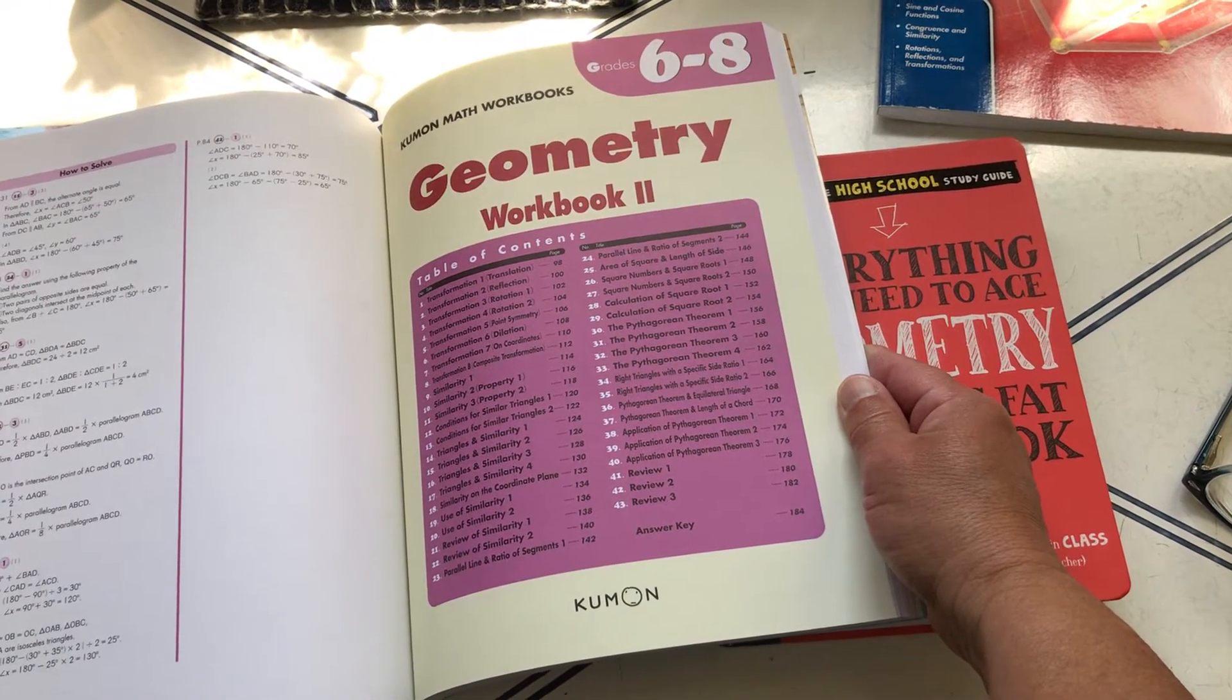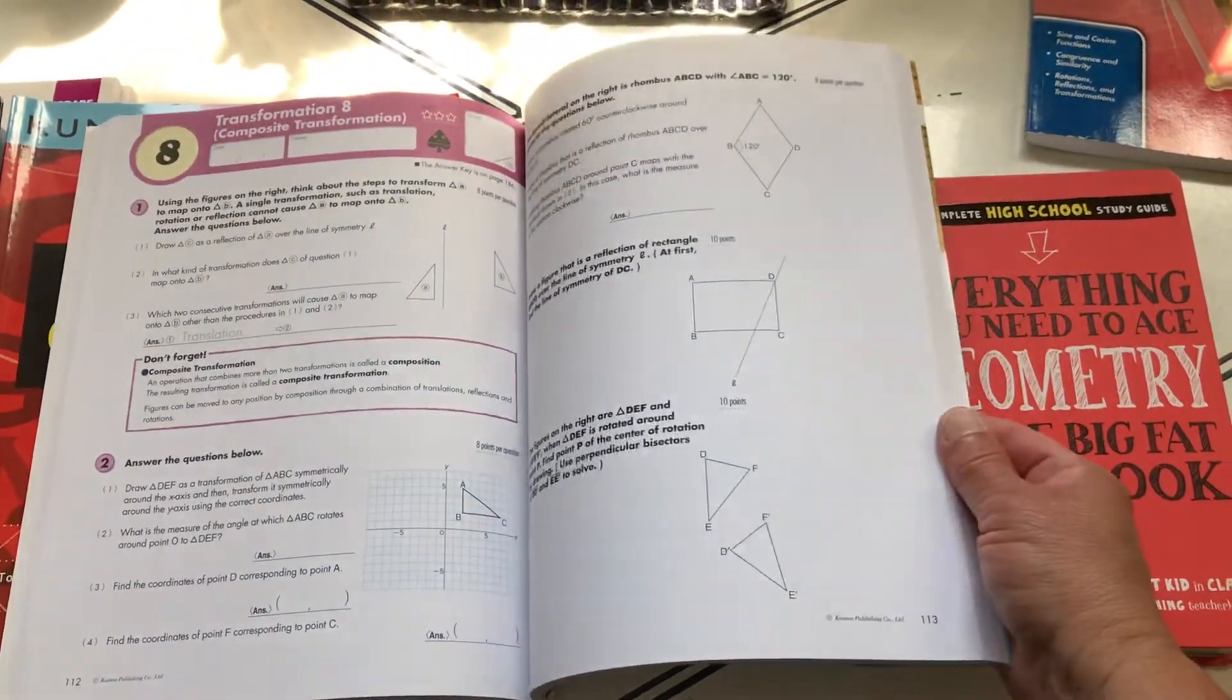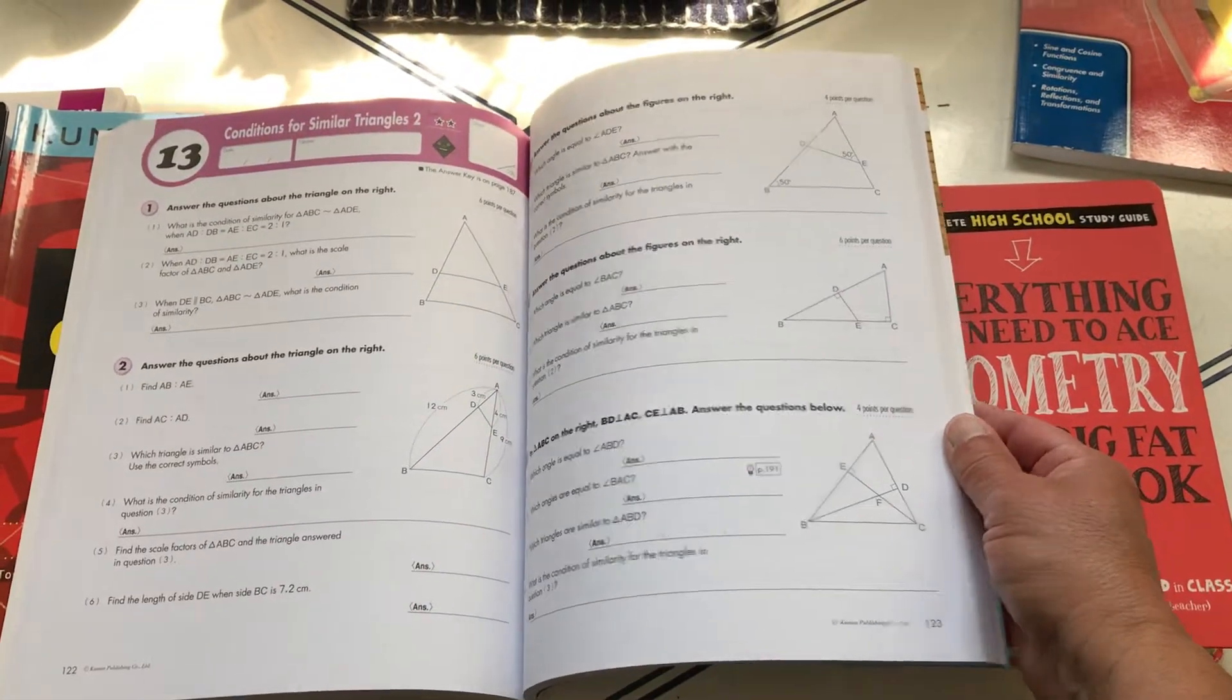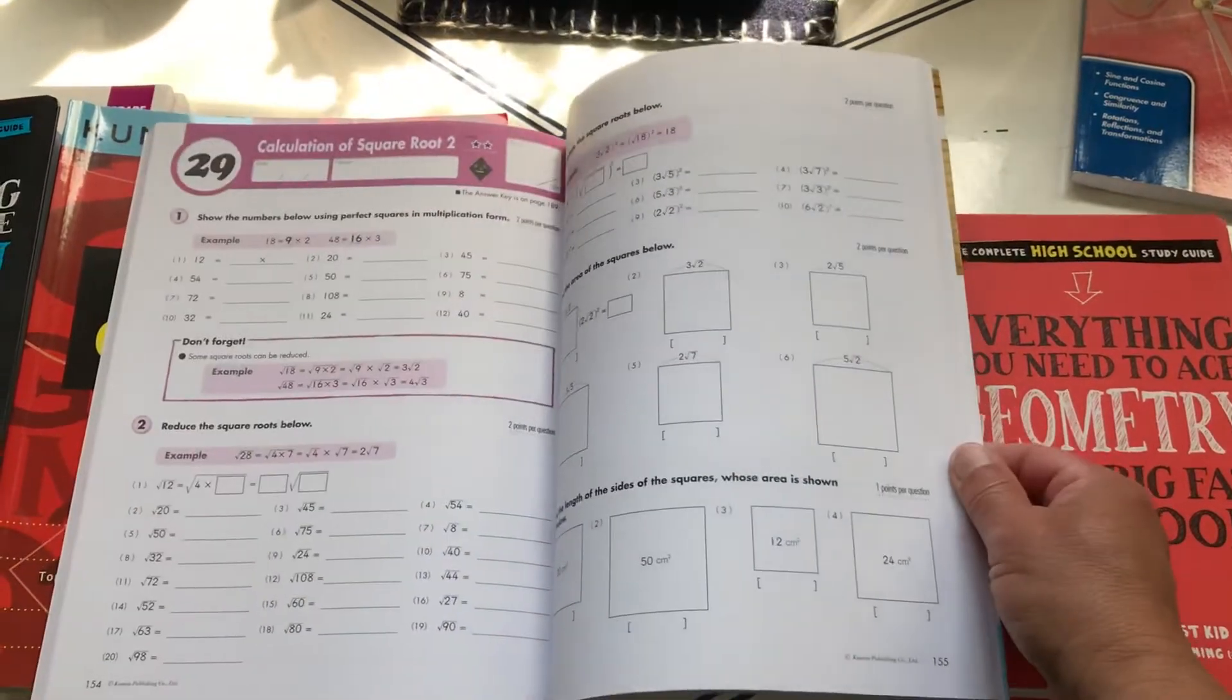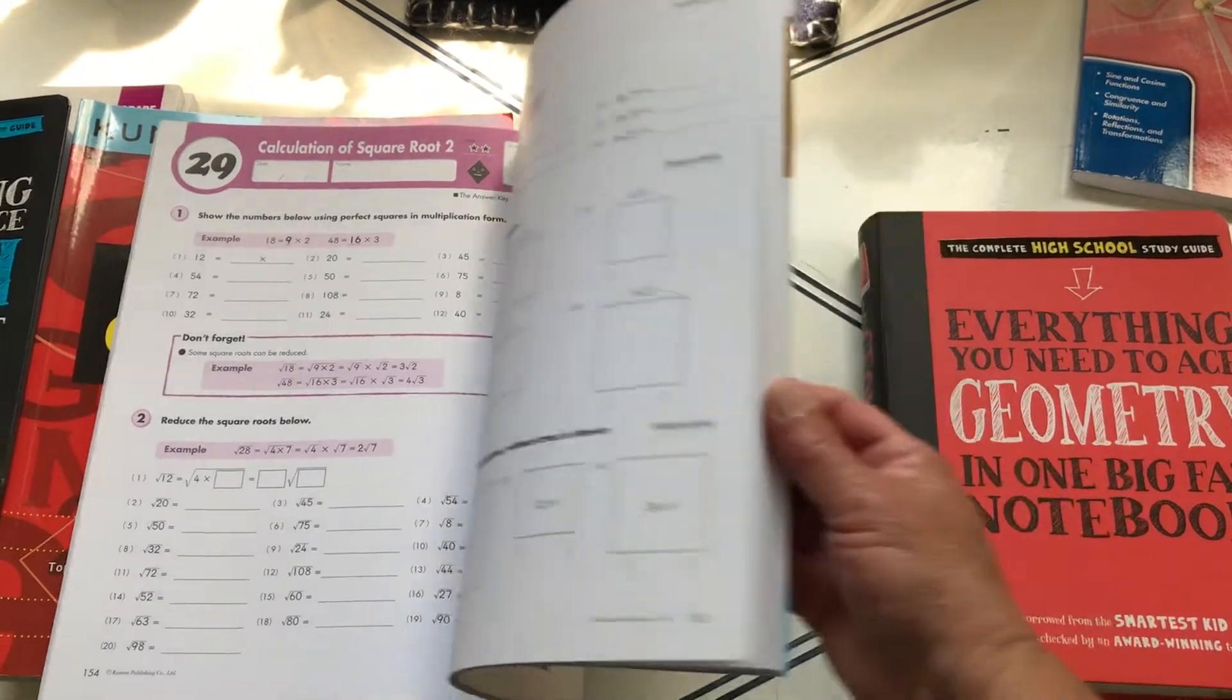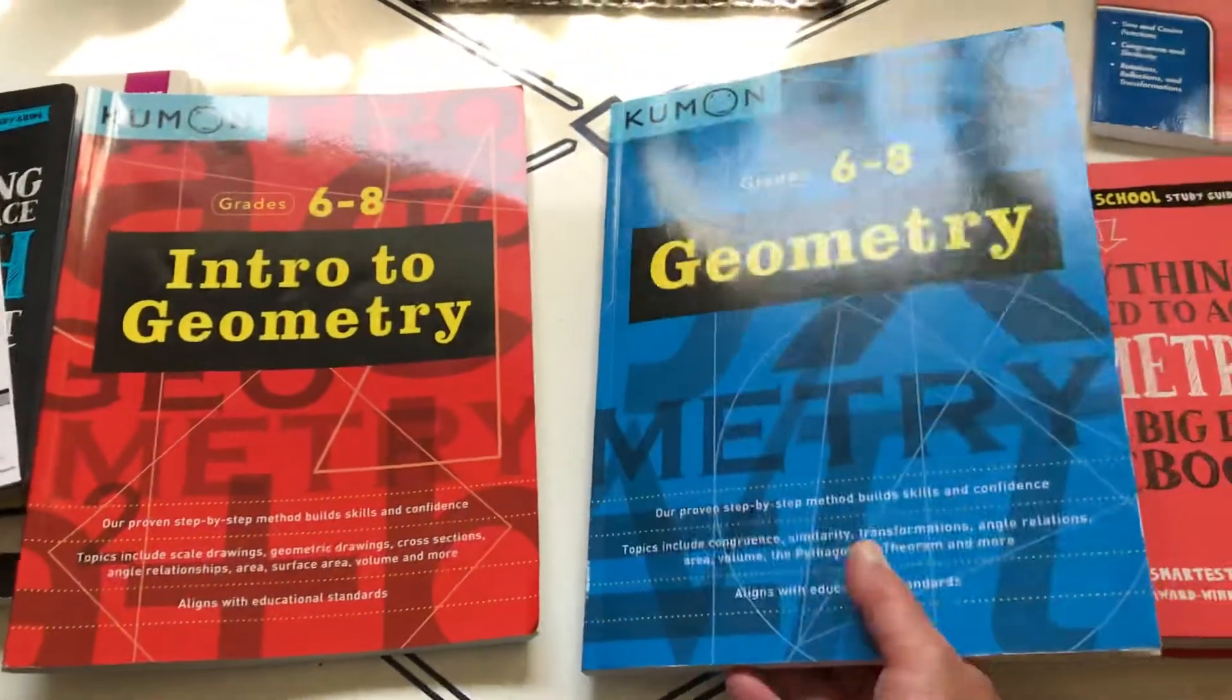Then you go into the second workbook. Gotta get that Pythagorean theorem in there, wouldn't want to forget that. But here's the second part of the book. Calculation of square root, calculation of square root, oh boy.